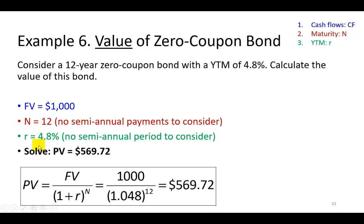So armed with this, we calculate the price, the present value that is, to be $569.72, which as you can see, this is a discount value. And the difference between this amount which you pay and what you're going to receive at the end of 12 years, that difference would represent your implied interest income.